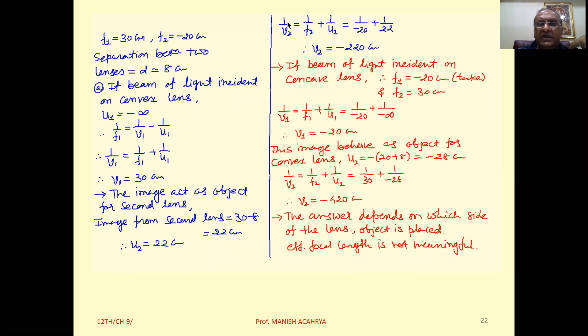We can use the equation: 1 upon V2 equals 1 upon F2 plus 1 upon U2. F2 is minus 20, U2 is 22 positive because the object is on the opposite side. When we solve this, the answer will be minus 220 centimeter.